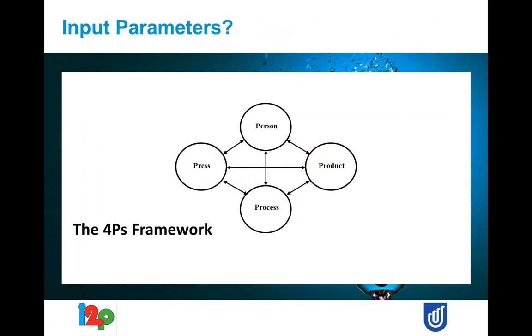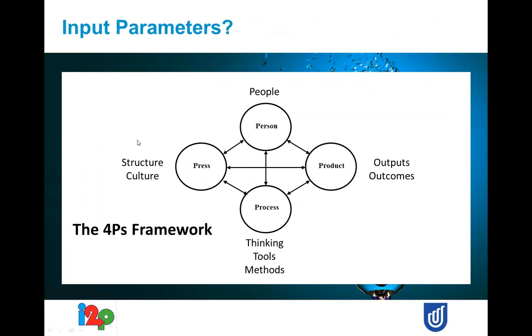In the research literature on creativity and innovation, we describe these inputs and the process using the 'four P's' framework: the Person, the Product, the Process, and the Press — meaning the pressure or environment of organizational culture. In more familiar terms: person represents the people, product represents the outputs, process represents tools and methods, and press represents structure and culture.